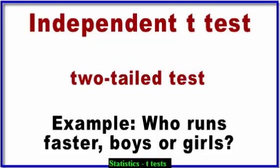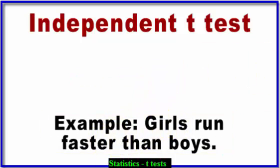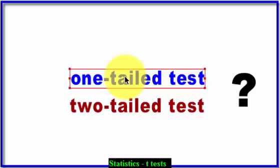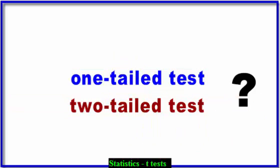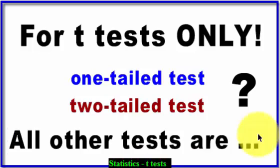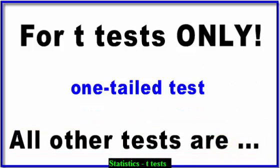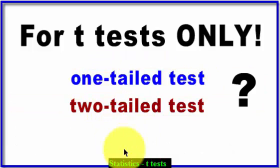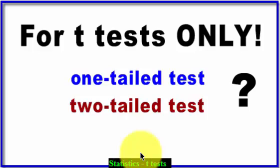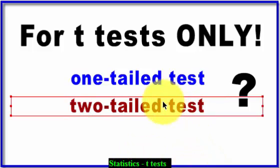If you do pick a side, like saying girls are going to run faster than boys, that makes it a one-tailed test. When to use a one-tailed or two-tailed test of significance is not always easy to determine, but they're only used for t-tests. All other tests — your F's and R's and other tests for significance — always use the one-tailed test. If you believe one group mean will be larger or smaller than the other, that makes it a one-tailed test — that's directionality. If you're uncertain, that's a two-tailed test.